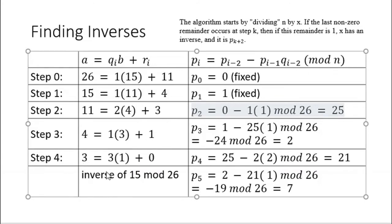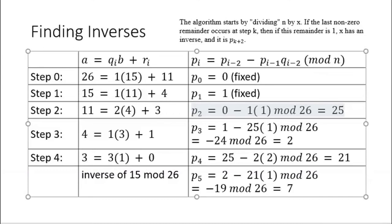At step 4, we get P4 = 21, and remainder becomes 0. Once remainder is 0, we stop. But we calculate one more step for P5. Using all available values, we get P5 = 7. When remainder becomes 0 at step 4, we compute one additional step on the P side. Therefore, 7 is the multiplicative inverse of 15 mod 26.